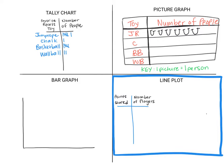For chalk, there's only one person who chose chalk, so I'm going to draw just one piece of chalk. For basketball, I can see from my tally chart that there were five people, so I draw five basketballs. For wall ball, I draw two, and I'll color them in so they look different from the basketballs. It's important in a picture graph that all your pictures look different so you can see what they represent. Looking at this, I can tell jump rope has the most and chalk has the least — and I can see I'd need one more person to like basketball for it to be even with jump rope.